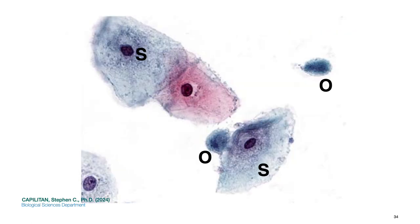Next is Trichomonas vaginalis in Papanicolaou stain at high power. This flagellated protozoan parasite commonly infects the female genital tract, presenting with itching and a frothy greenish vaginal discharge. The organisms labeled O appear pear-shaped or ovoid and are somewhat smaller than the surrounding squamous epithelial cells labeled S. The organisms stain a smudgy gray-green color; indistinct nuclei and red cytoplasmic granules may also be seen. The flagellae are not usually identifiable on routine preparations, and the surrounding epithelial cells may show reactive changes with scattered neutrophil polymorphs.